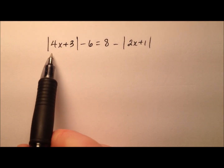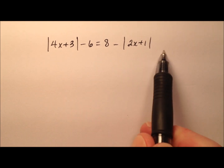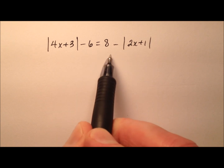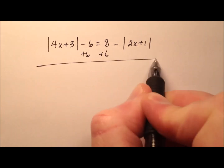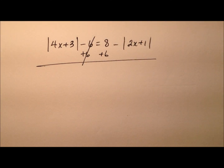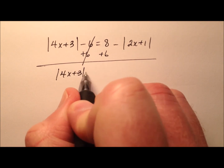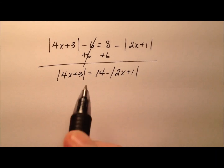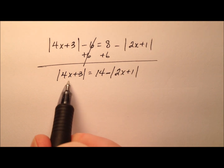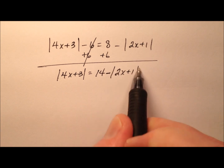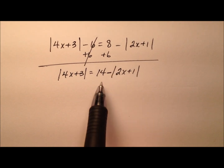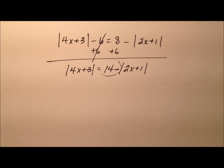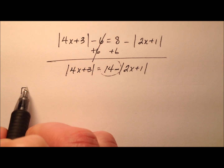In this second example, we again have two absolute value expressions in the equation, but outside the absolute values we have constants: a minus 6 and a positive 8. To simplify, I'll add 6 to both sides to limit the number of terms outside the absolute values. So the absolute value of 4x plus 3 equals 14 minus the absolute value of 2x plus 1. Since we have a number outside the absolute values, it won't be as simple as just two equations — we're actually going to have four different cases.